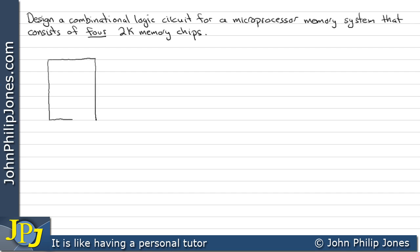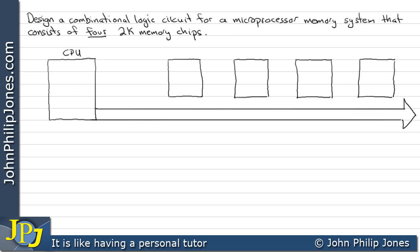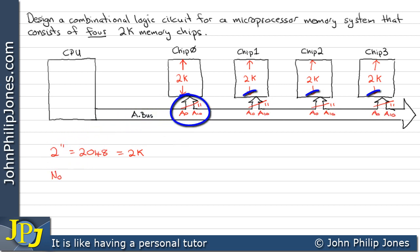The first thing to do is draw the schematic diagram. Here I'm drawing a central processing unit and four memory chips. The memory chips are going to be supplied by an address bus, and I'm labelling the memory chips from 0 through to 3. We take a tap off the address bus to each memory chip. Each chip is 2K — two kilobyte locations — so we need 2 to the 11 address lines going to each chip, because they're all identical.